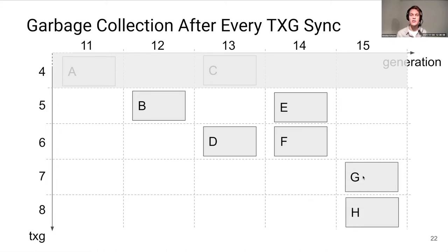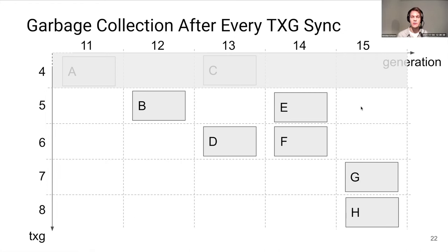Finally, we write records G and H into a new generation, also starting some new TXGs. Note that at this point, garbage collection will kick in pretty soon because at any given time there can only be three unsynced transaction groups. Since there is an entry for transaction group 8, it's clear that transaction group 5 has already synced out. So let's recap the metadata: we've observed transaction group, generation numbers, and unique IDs for each entry.